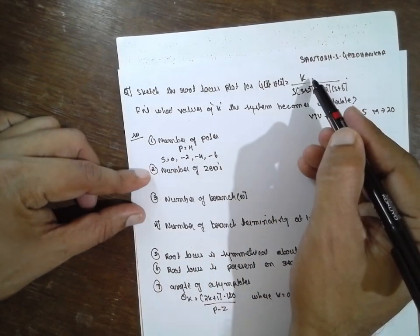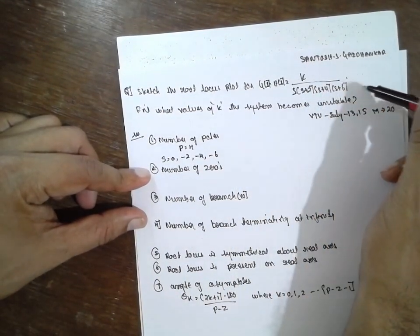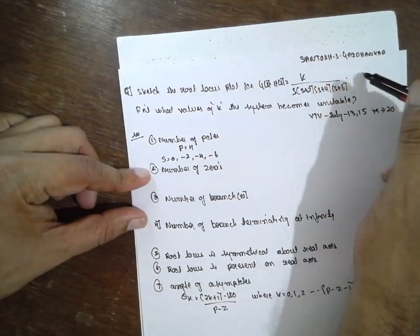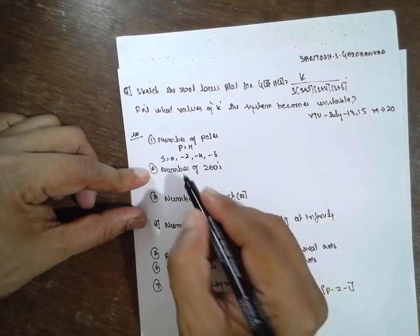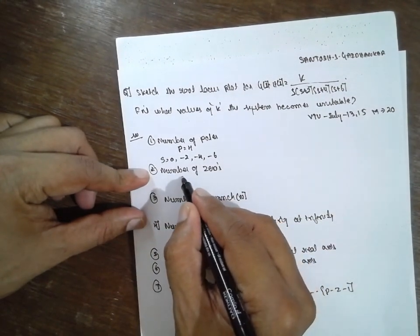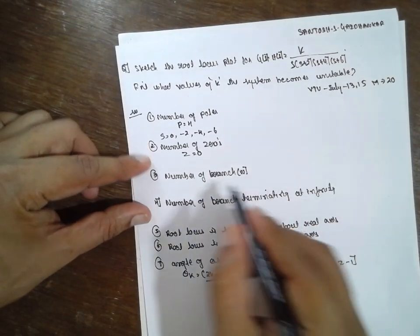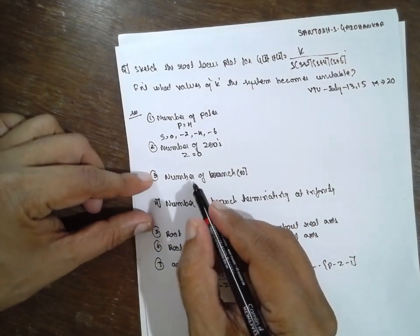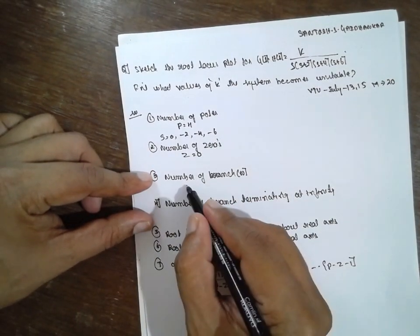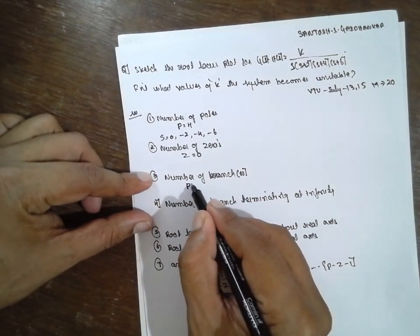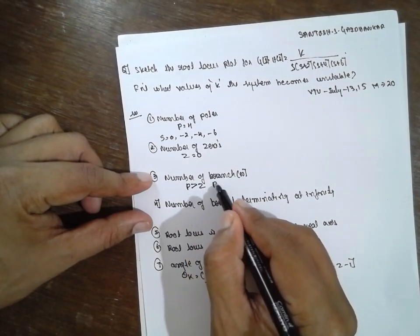Number of zeros: the numerator has no finite zeros, therefore z is equal to 0. Number of branches: since p is greater than z, the number of branches equals p, which is 4.